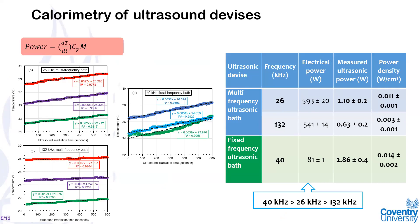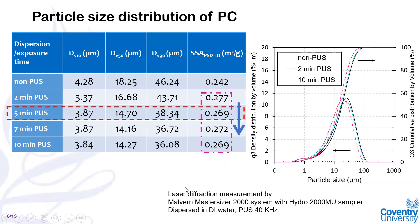The first important step was knowing how much real energy would be dissipated into the system by the ultrasound systems used in this research. As you can see, the 40 kilohertz fixed-frequency bath used for particle size distribution showed the higher power density of sonication energy, followed by 26 kilohertz and 132 kilohertz applied by the multi-frequency ultrasonic bath. The 40 kilohertz was used only for particle size distribution study.